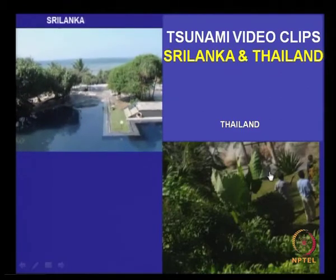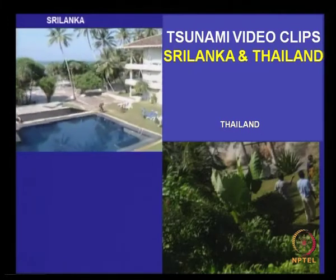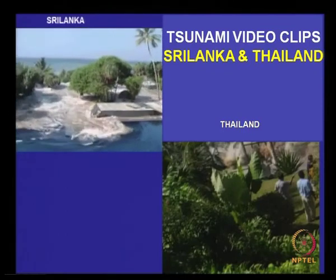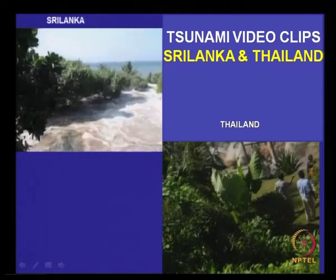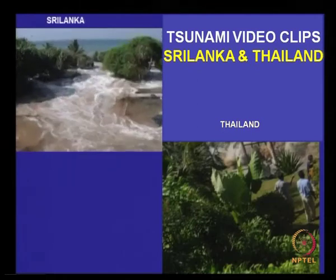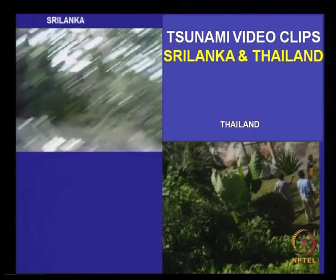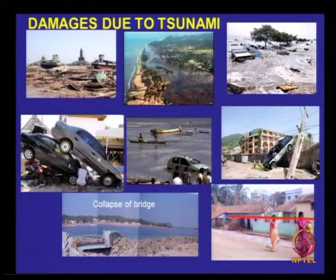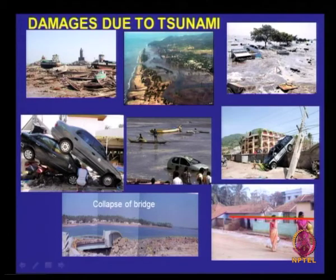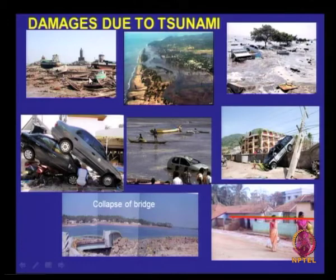You see the ocean water entering into the swimming pool of a hotel in Sri Lanka. You can also feel the speed with which the water level was moving. These damages due to tsunami — almost all the glimpses of the damages caused along the Chennai coast are shown here. You see vehicles just lifted and floating, and here is the coastal flooding. This is the tip of the Indian peninsula where you see boats going and hitting against each other and getting damaged.